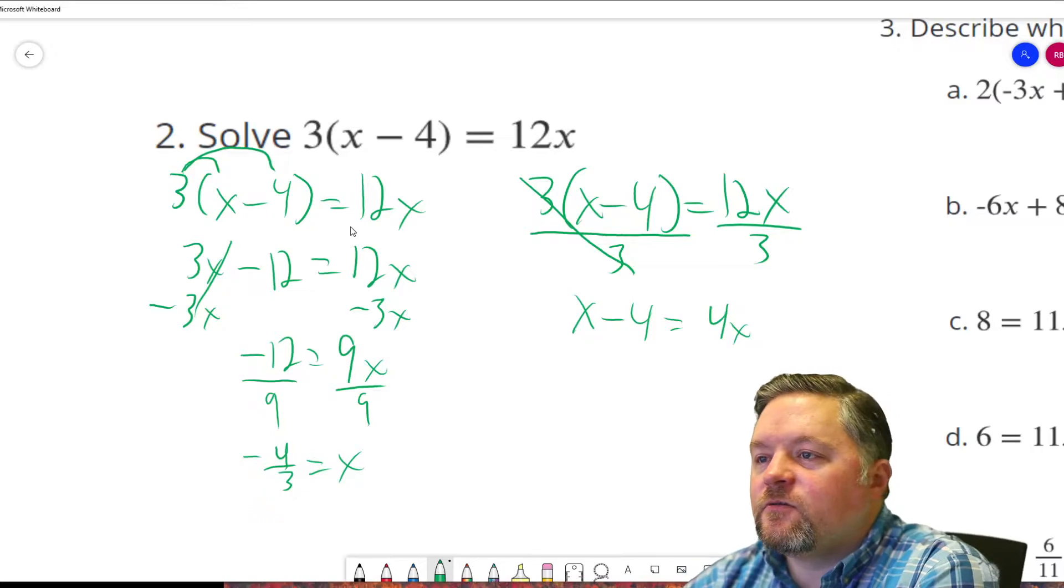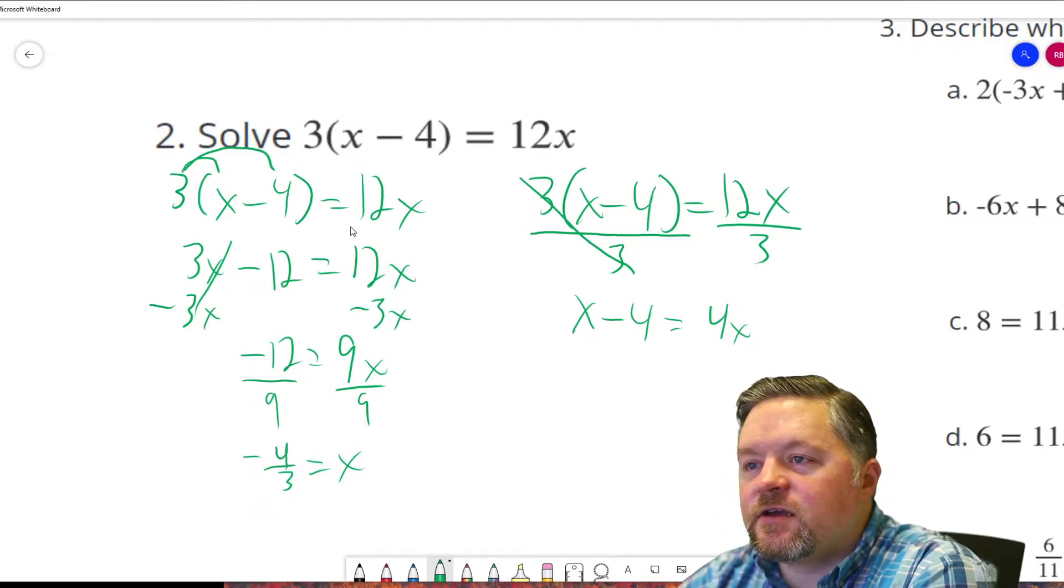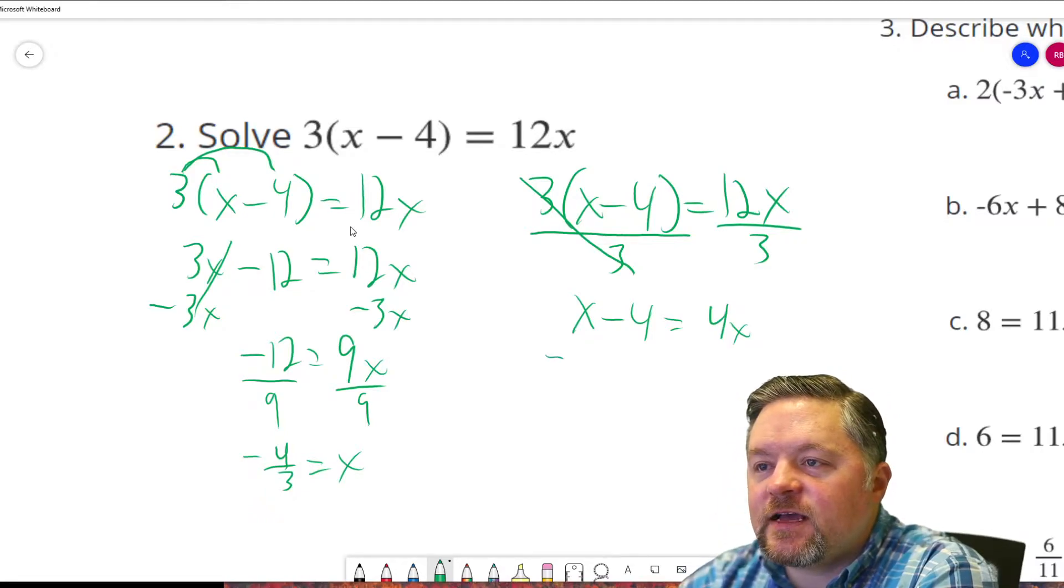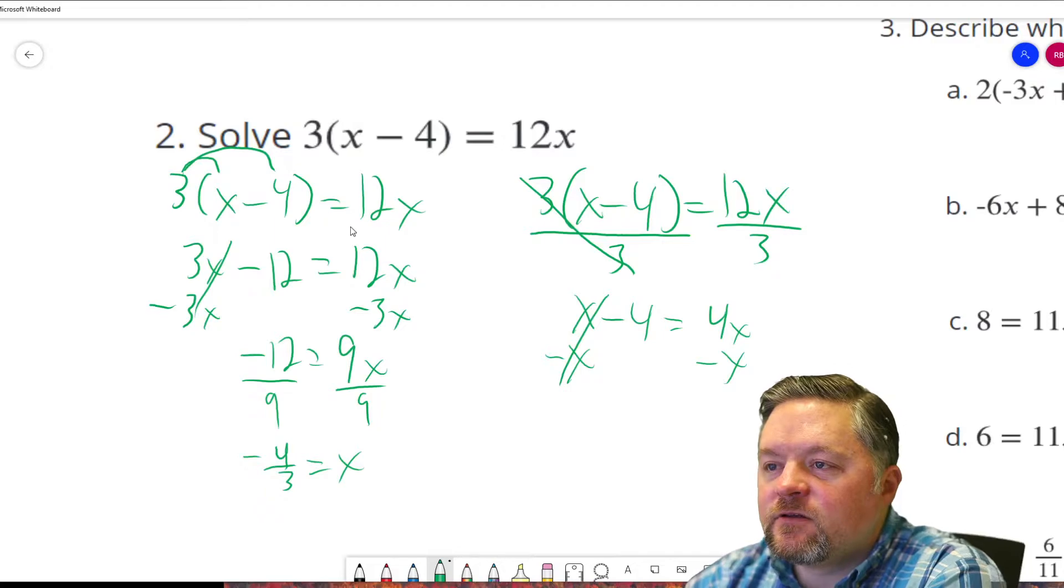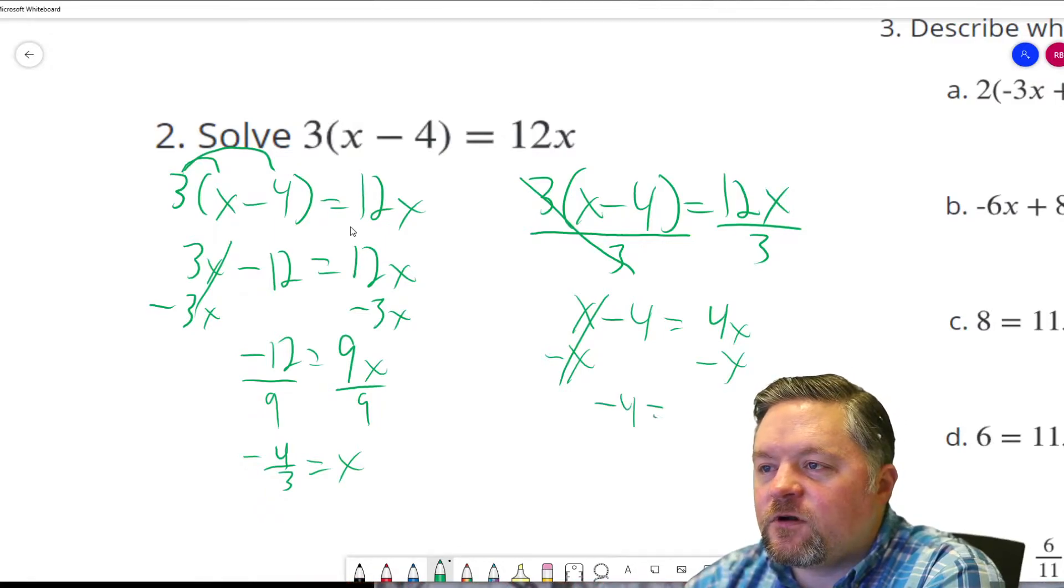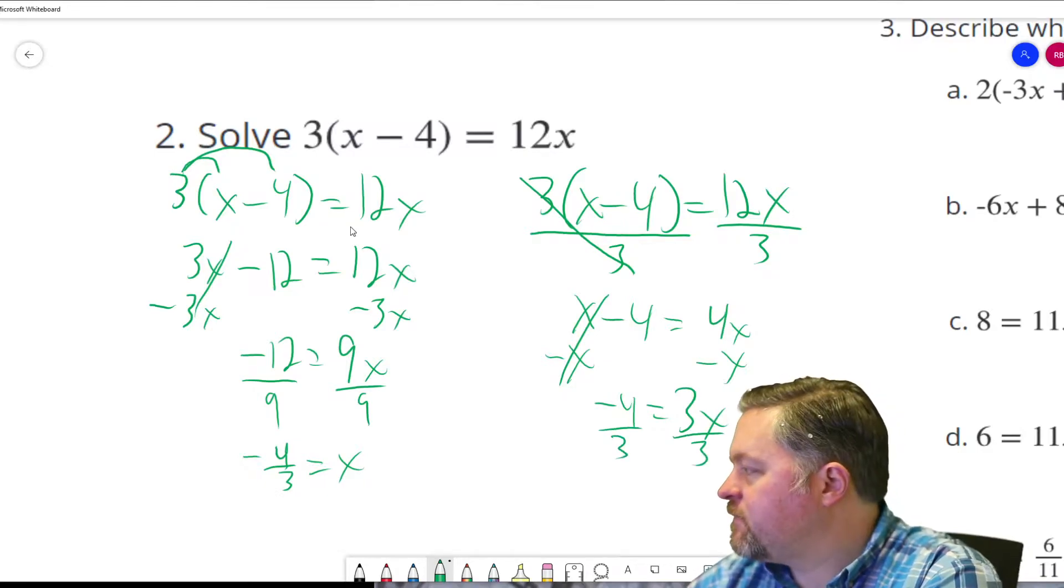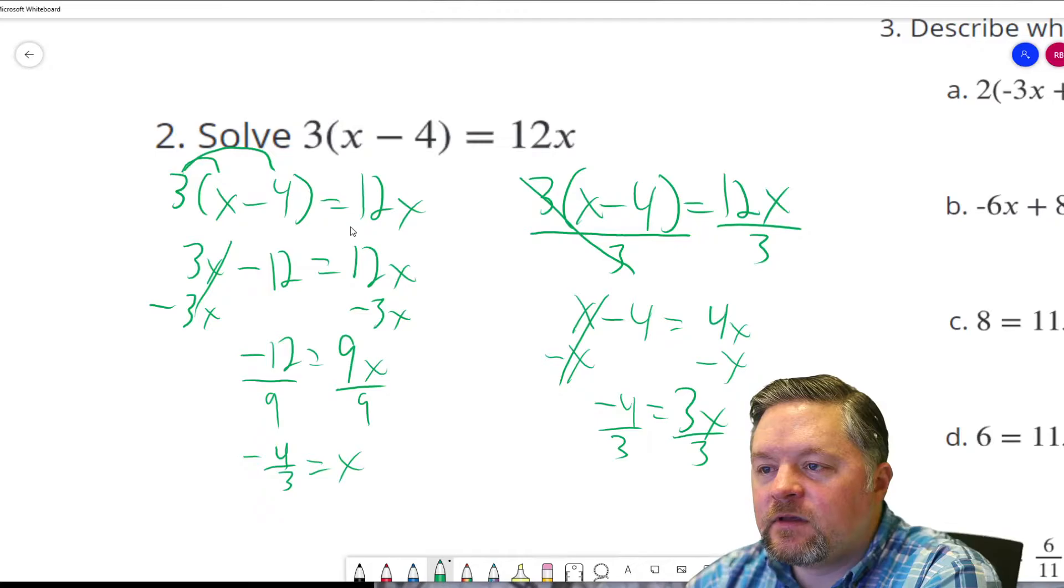Now what do we have to do? We've got to get all the x's on one side of the equation. So let's get rid of this x. Subtract x from one side. You've got to subtract x from the other. Those will cancel. Negative 4 equals 4x minus x is 3x. Divide each side by 3. Negative 4 3rds equals x.